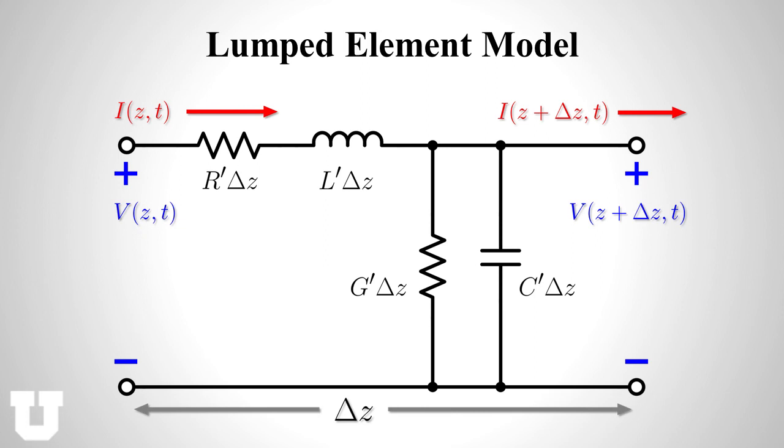So we're going to take a limit and of course when you do limits like this approaching zero you get a bunch of derivatives which will in turn lead us to the telegrapher equations.